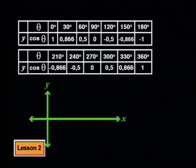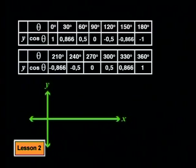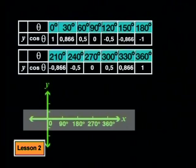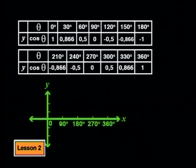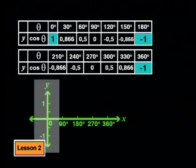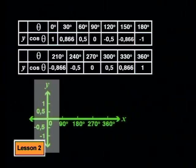Remember that we need to find enough values to be able to see what the graph looks like. Once we have enough points in the table, we are ready to plot the graph for the two variables, theta and cosine theta. Again, we need to put the theta values on the x-axis as independent values, going from 0 degrees to 360 degrees. Then we need to put values for cosine theta onto the y-axis. From the values in the table, we can see that we'll need to go up to 1 and down to negative 1 again. Let's mark 0.5 and negative 0.5 as well.